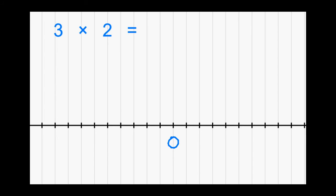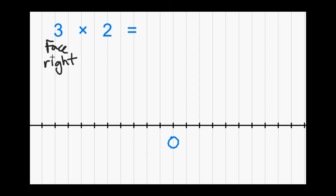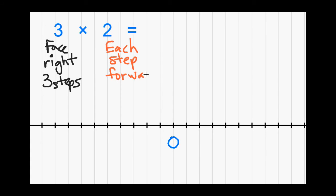We're going to model multiplication of integers using a number line. Our multiplication problem gives us all the information we need. The first number, positive 3, tells us we're going to face right on our number line — toward the positive numbers — and we need to take three steps. The second integer, positive 2, tells us that each step is going to be forward, since it's positive, and each step is two units long.